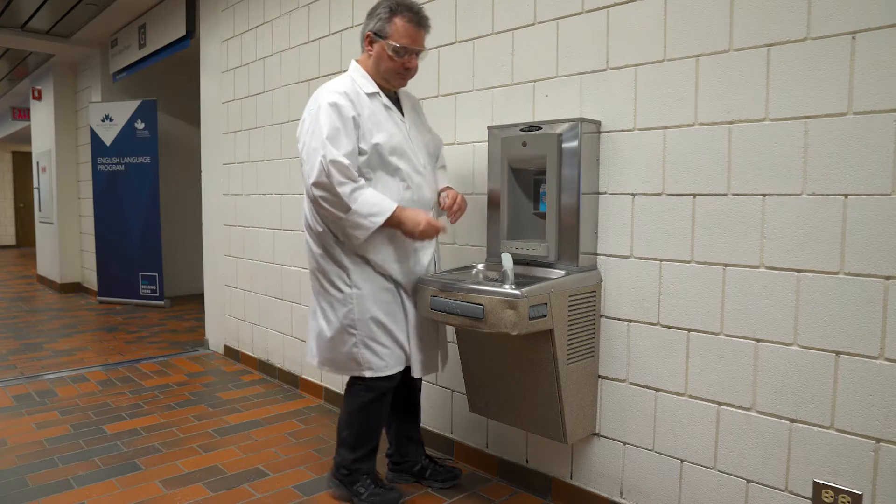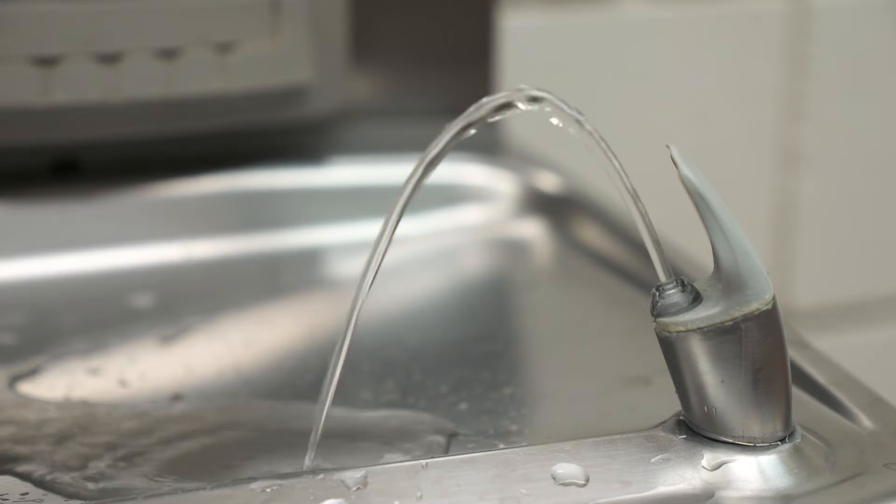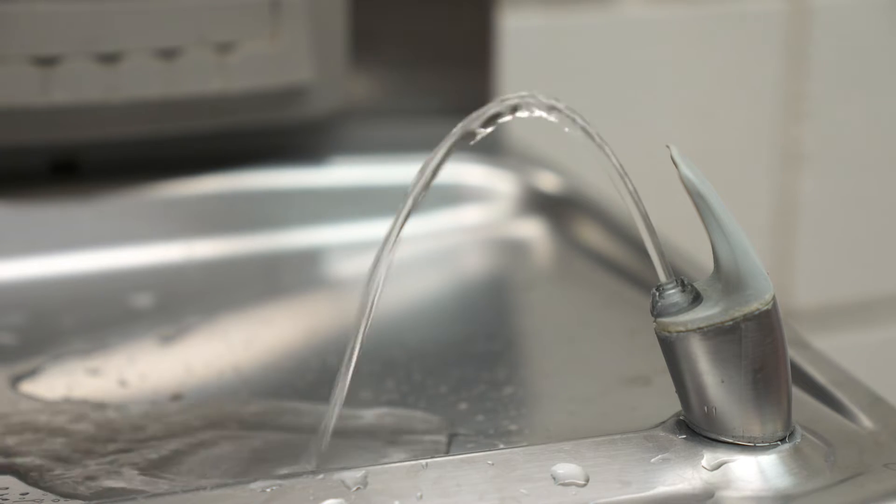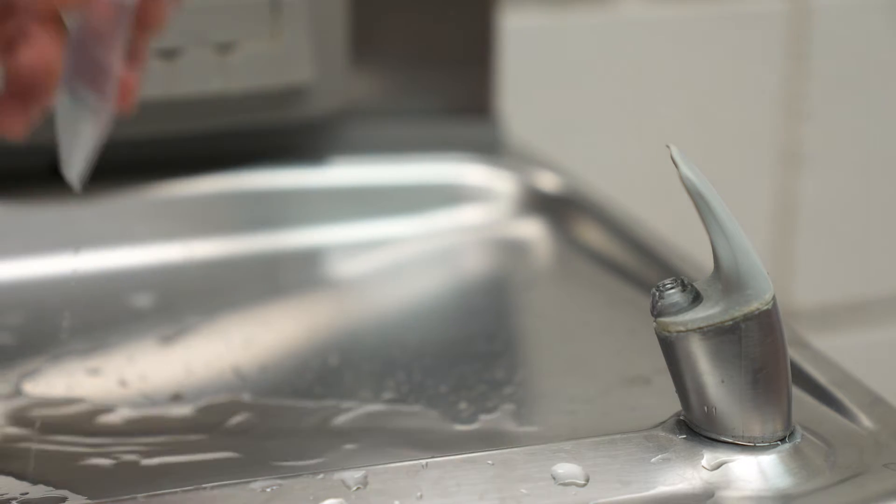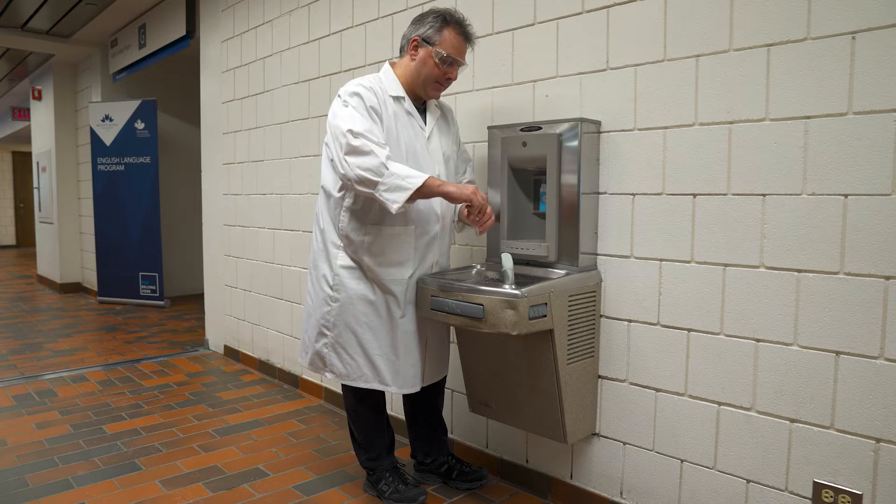To get a flowing water sample, what we asked you to do was to run the water fountains for at least 30 seconds before you took your water sample. We prefer to use flowing samples because they are a better representation of what you would normally drink at your school.